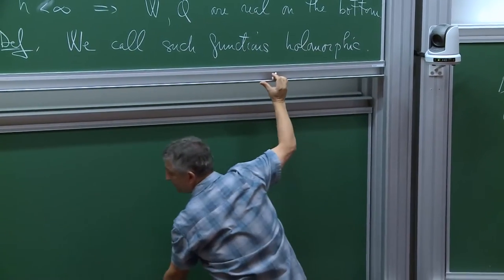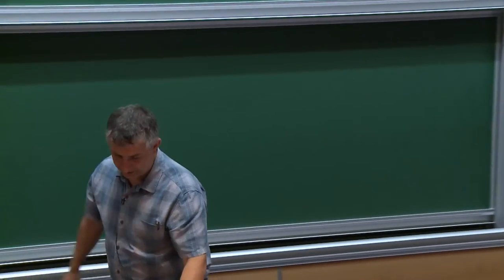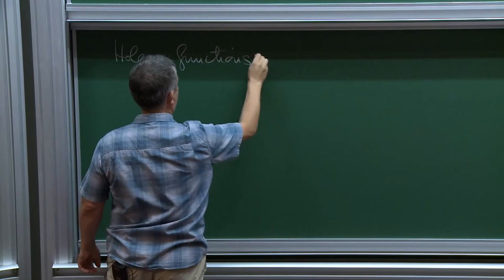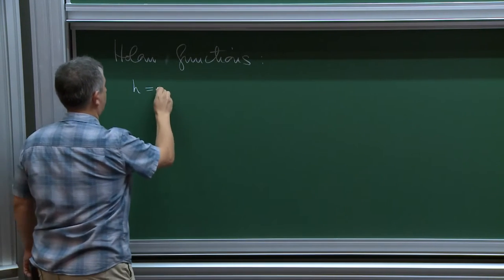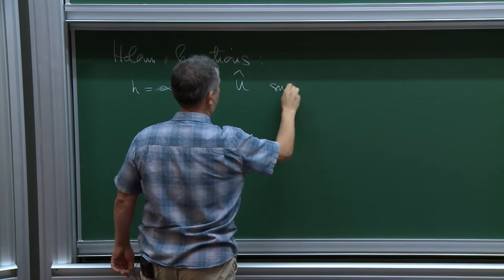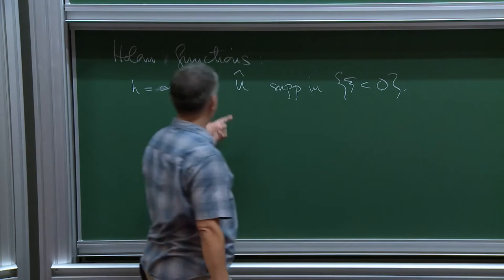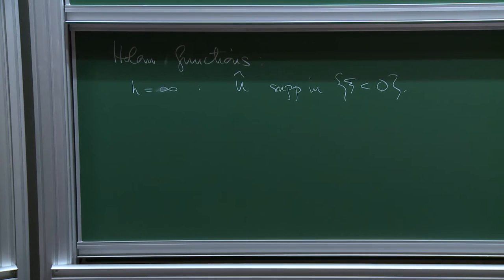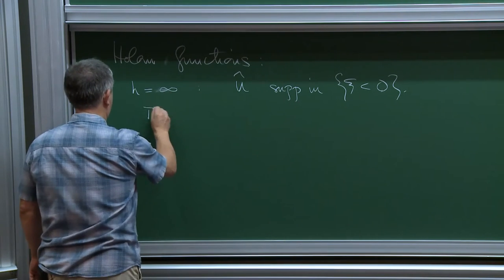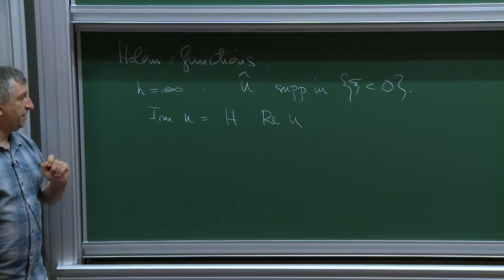The space of holomorphic functions is obviously an algebra. In the infinite depth case it's a complex algebra, whereas in the finite bottom case it's only a real algebra — multiplication by i is not holomorphic in the finite bottom case. In a Fourier description, if the depth is infinite, the Fourier transform of u is supported where psi is less than zero — only negative frequencies. Then the imaginary part of u is the Hilbert transform of the real part.